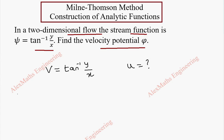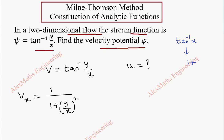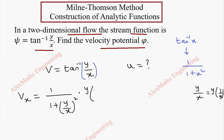First, we find the partial derivative with respect to x. The derivative of tan inverse is 1/(1 + x²), but instead of x we have y/x, so it becomes 1/(1 + (y/x)²). Now since we are doing a partial derivative with respect to x, y is a constant, so y/x is y times (1/x), and the derivative of 1/x is minus 1/x².